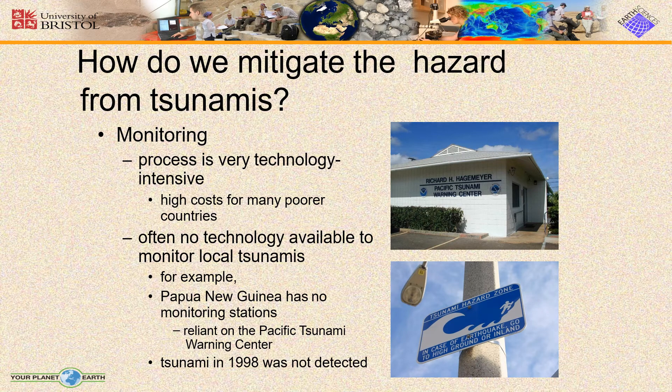Now, how do we mitigate the hazard from tsunamis? First, the monitoring process is very technology-intensive and high cost. For many poorer countries, often no technology is available to monitor local tsunamis. For example, Papua New Guinea has no monitoring systems and is reliant on the Pacific Tsunami Warning Center. The 1998 tsunami in Papua New Guinea was not detected.